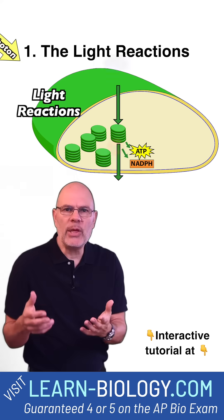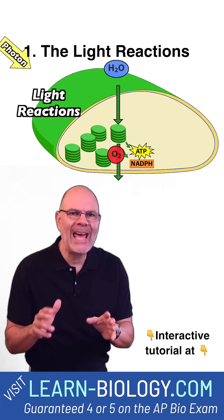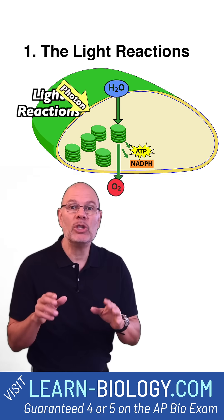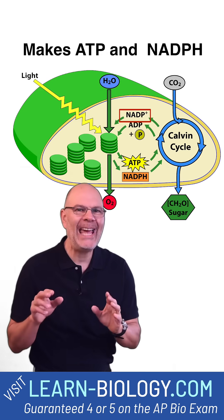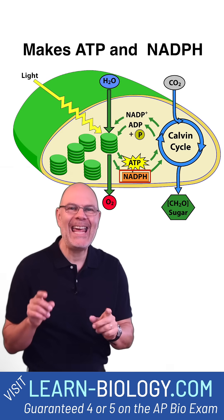These reactions occur in the thylakoids, which take water and light energy and use them to accomplish two things: making ATP and reducing a molecule called NADP+ into NADPH.